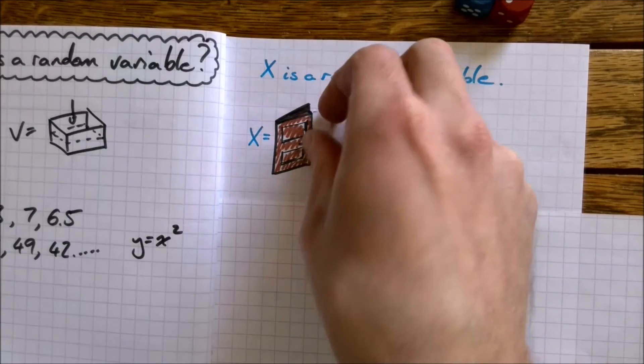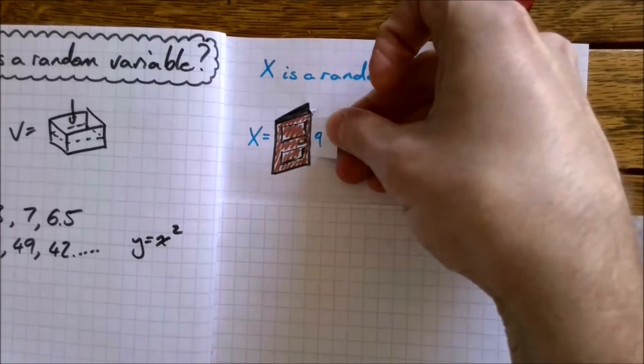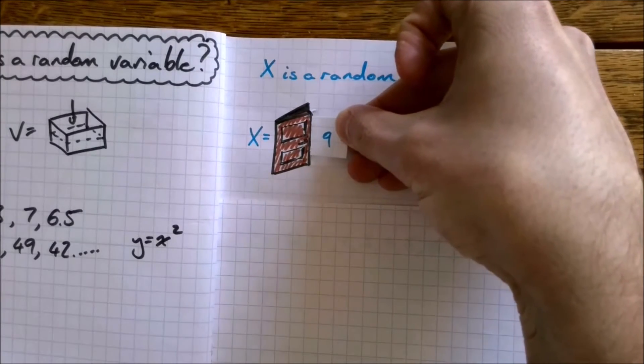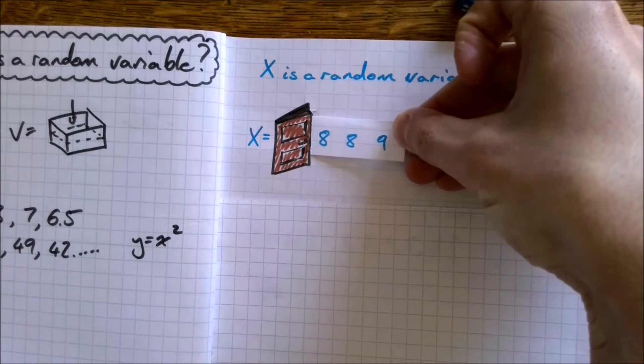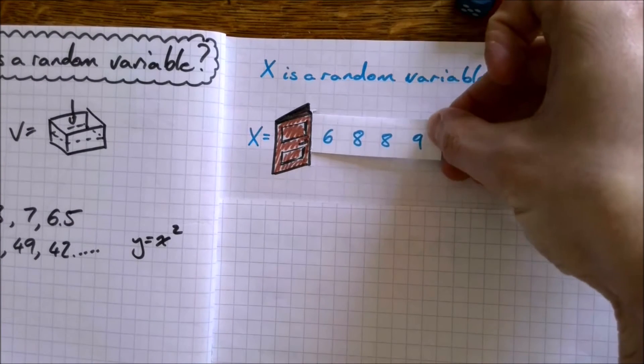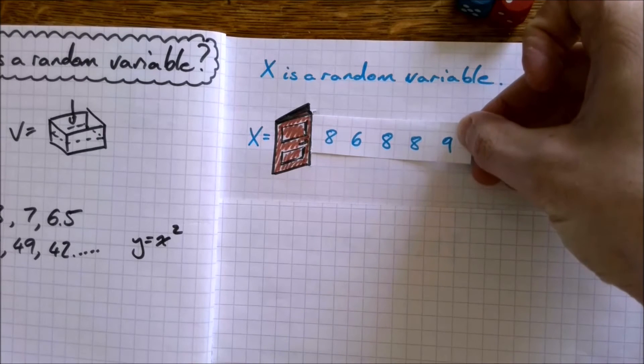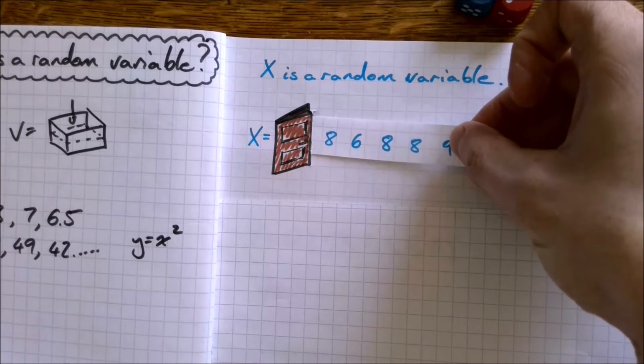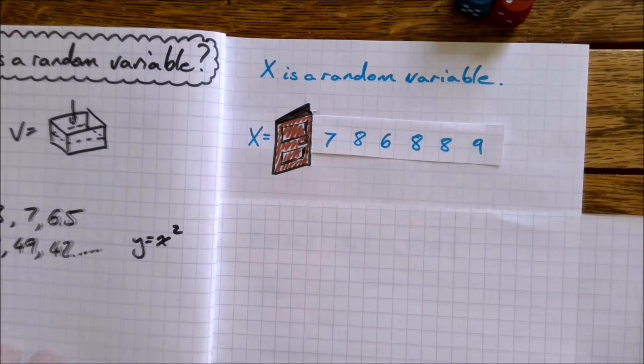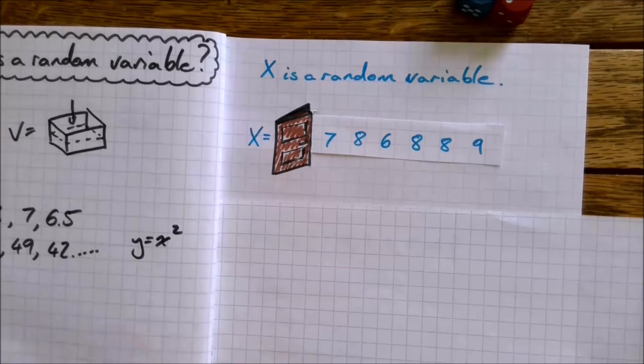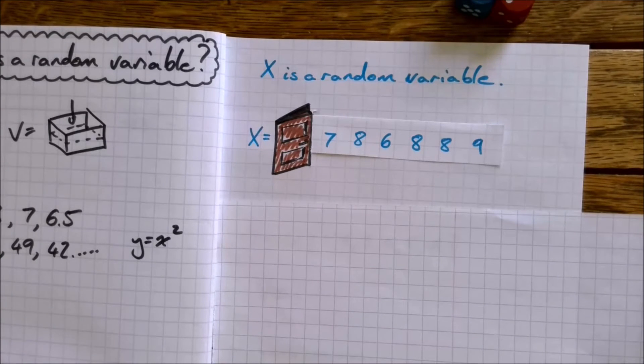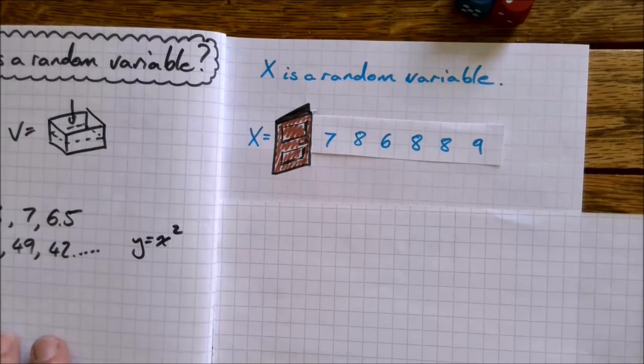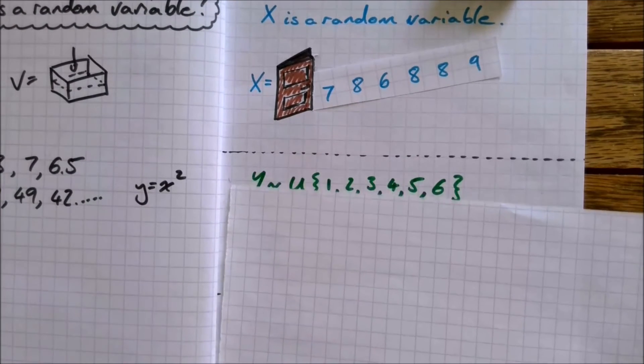So here, x, this random variable, it's 9 first, and then now it's 8. Now it's 8 again. Now it's 6. Now it's 8 again. Now it's 7. This variable, unlike the x we used before, we can't choose what it is, but we can study this randomness and it's got patterns in it, or we can define our random variable to have these patterns.